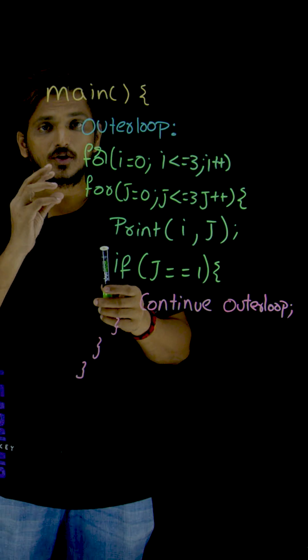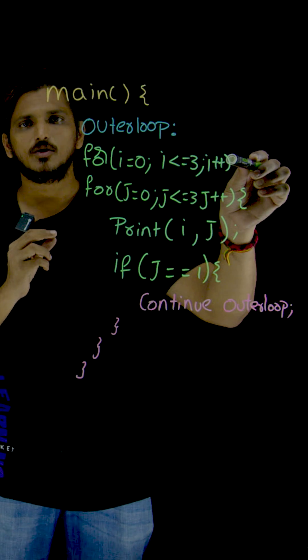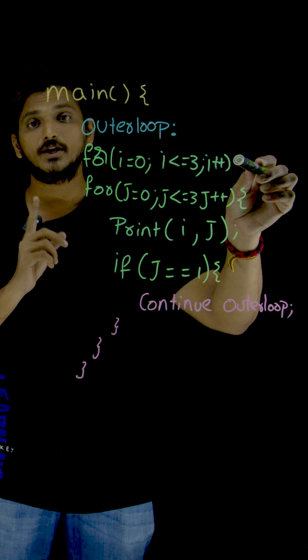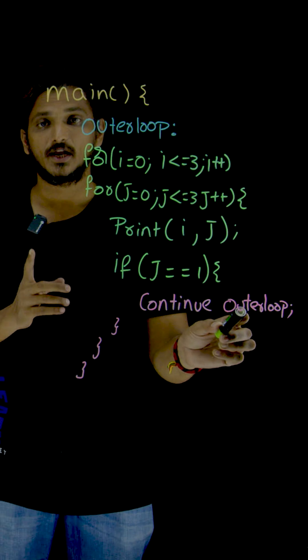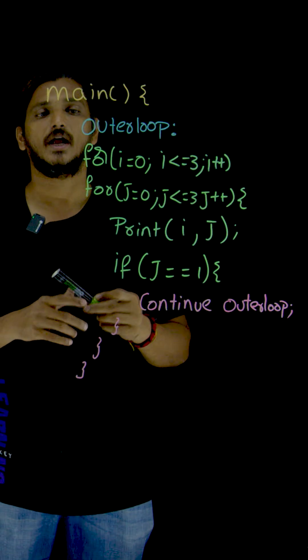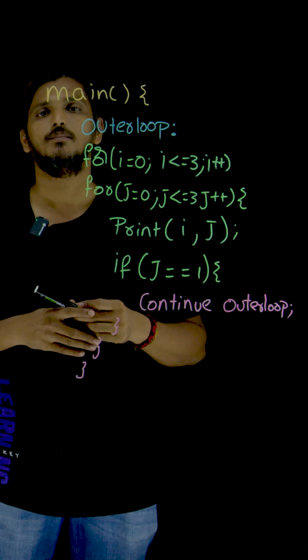So if you want to skip the outer loop, we have to mention continue statement in the outer loop. But from the inside of the inner loop, we can skip the outer loop. That is one of the uses of label.